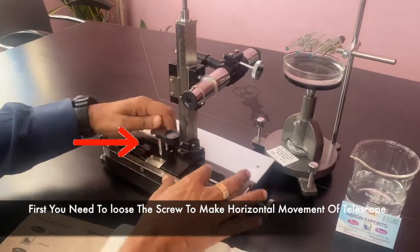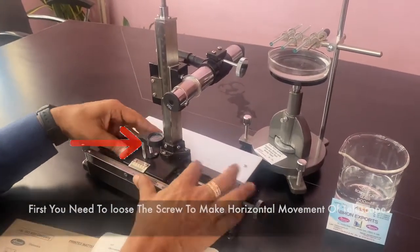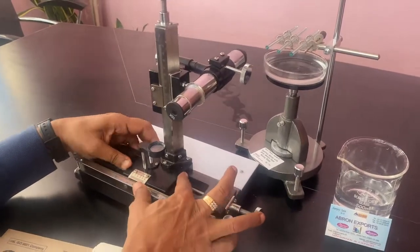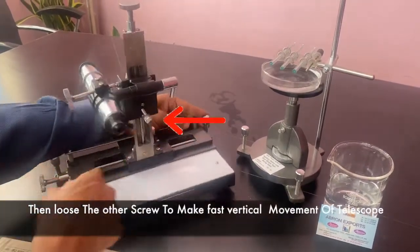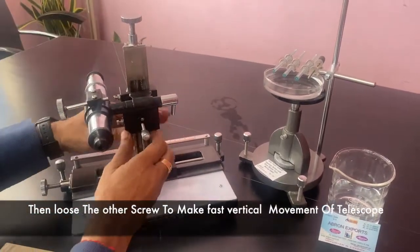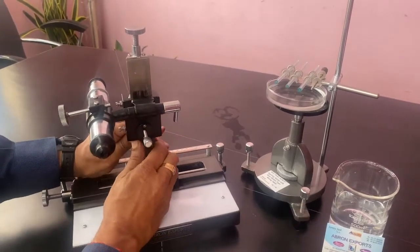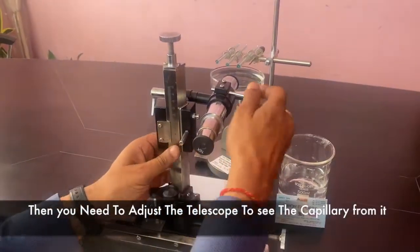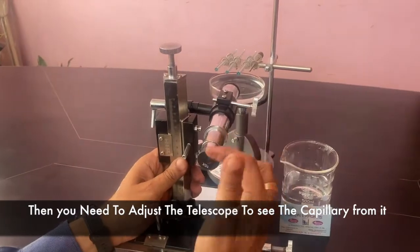First you need to loosen the screw to make horizontal movement of the telescope. Then loosen the other screw to make fast vertical movement of telescope. Then you need to adjust the telescope to see the capillary from it.